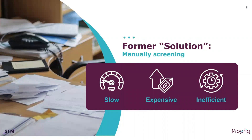Why does it happen? It's because, so far, images are screened manually. This process is slow, expensive, and usually inefficient. Editors cannot accurately compare every image included in the many papers they receive. This leads to failures in the scientific publication process.